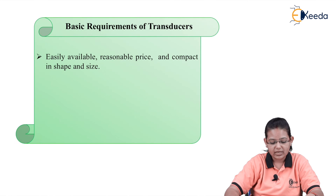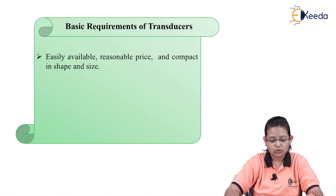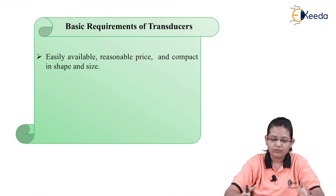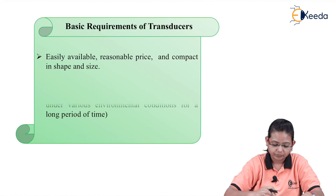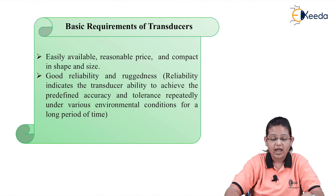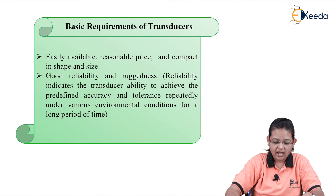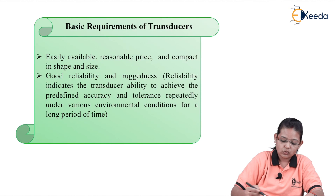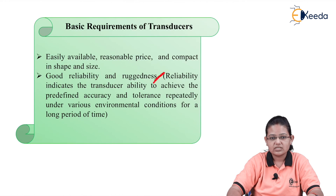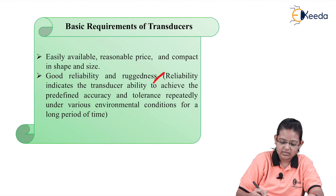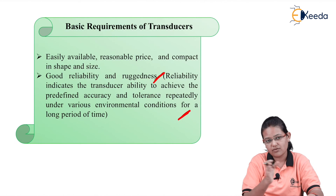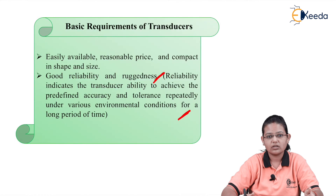The transducer should be easily available, have a reasonable price, and be compact in shape and size. It should also have good reliability and rigidness. Reliability indicates the transducer's ability to achieve predefined accuracy and tolerance repeatedly under various environmental conditions over a long time period. Rigidness means that by varying environmental conditions, it should still give the same output values.